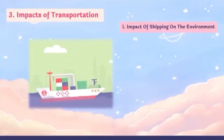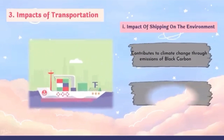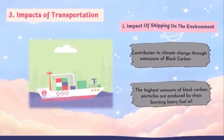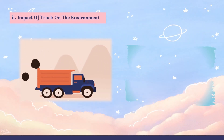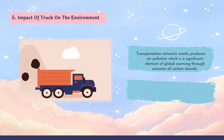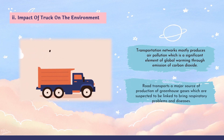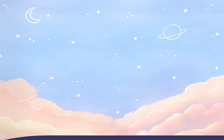Third are the impacts of transportation. Shipping contributes to climate change through emissions of black carbon — the highest amounts are produced by ships burning heavy fuel oil. For trucks, transportation networks mostly produce air pollution, a significant element of global warming through emission of carbon dioxide. Road transport is a major source of greenhouse gases, which are suspected to be linked to respiratory problems and diseases.